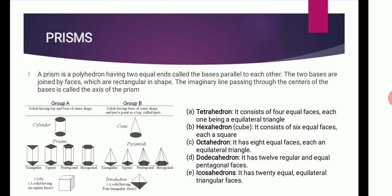In Group B, the pyramids have triangular, square, or pentagon shape at the bottom. But the top has a single point which is nothing but an apex.